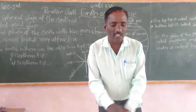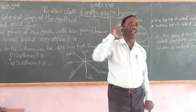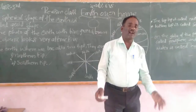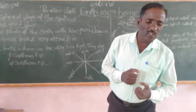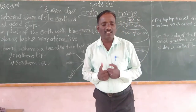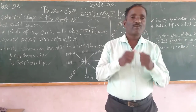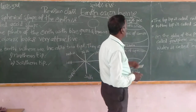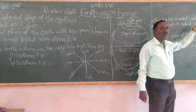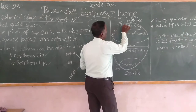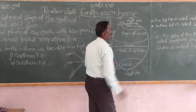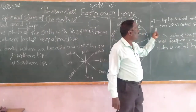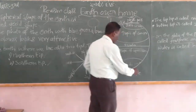You already know that the globe is the model of the earth. It is easy to learn more about the earth with the help of the globe. The top tip is called the North Pole. The bottom tip is called the South Pole.